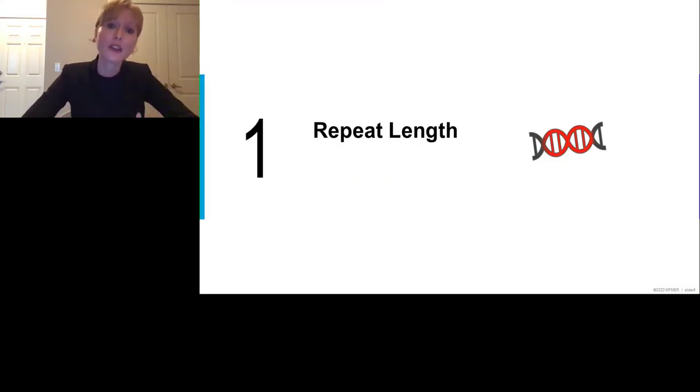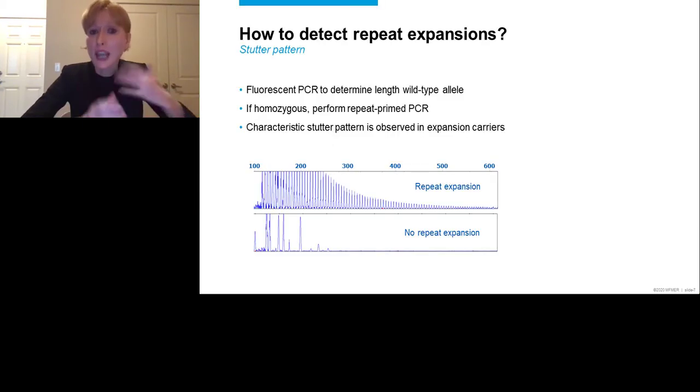And today, I will cover two topics, the length of the C9ORF72 expansion and the presence of interruptions. But before we discuss that, I think it's important to know more about detection methods for this C9ORF72 repeat expansion. So in my lab, we generally use a two-step protocol. We start with a fluorescent PCR, a fragment-length analysis, that allows you to determine the length of the wild-type allele. If you see two peaks, then you know that this individual is heterozygous and has basically two wild-type alleles. When you see a single peak, it's more challenging to interpret the results because there could be multiple explanations.